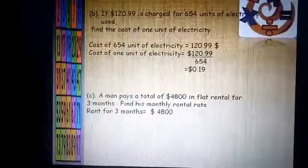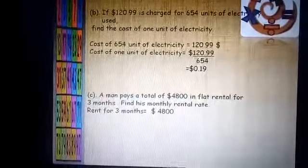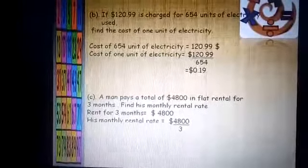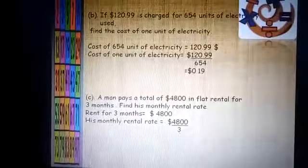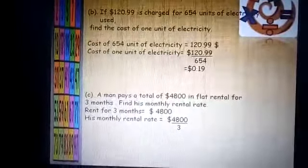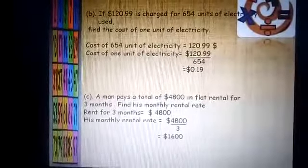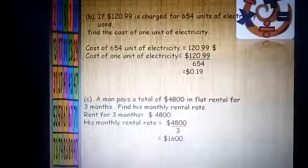And his monthly rent for 1 month: we will divide the total 3 months rent by 3. And then we will get the answer of 1 month. $1600 he or she will pay for 1 month.